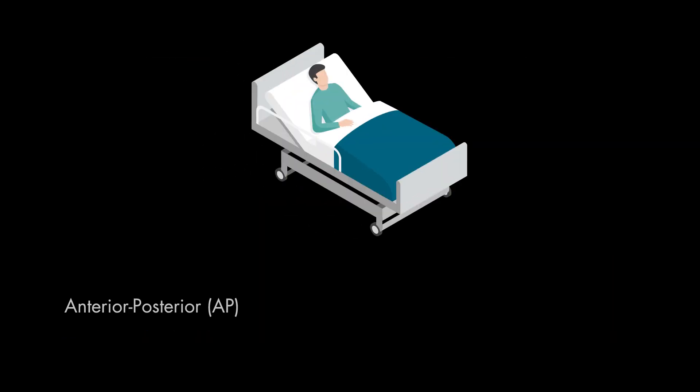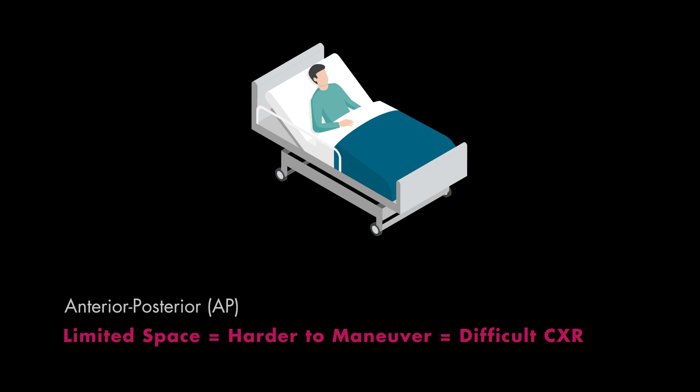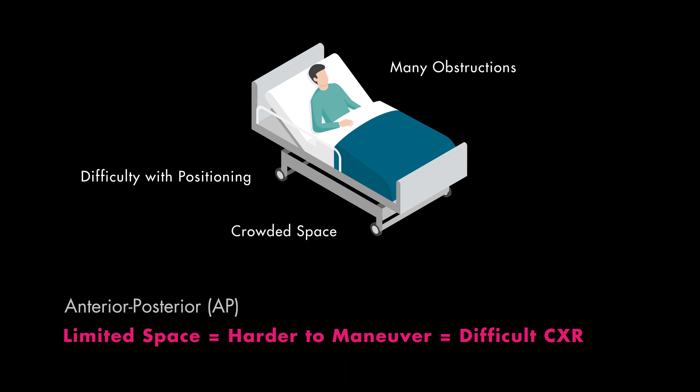In a portable x-ray, it is more difficult to position the patient who may be hunched over in bed. Important aspects of x-ray quality such as position and rotation may be difficult to obtain, versus an ambulatory patient who is able to freely stand up without many distracting elements surrounding them. All of these factors make it more difficult to maneuver the patient and overall give the x-ray technician a potentially limited study.